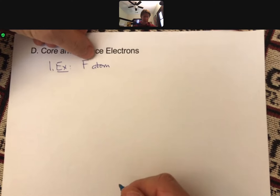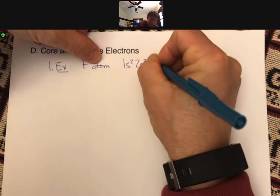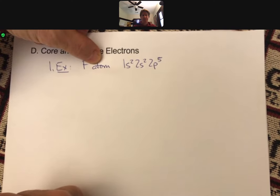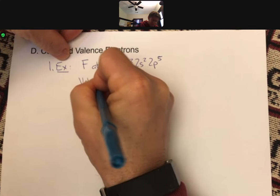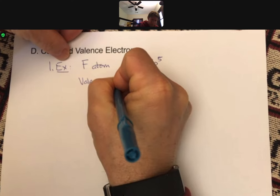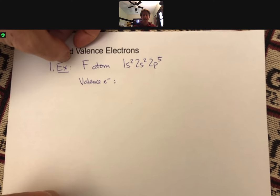So fluorine atom is going to have its electron configuration 1s2, 2s2, 2p5, and the valence electrons are going to be defined as all electrons with the highest value of n.